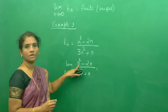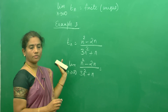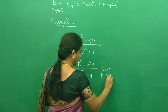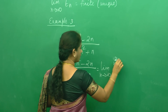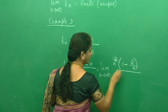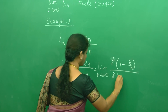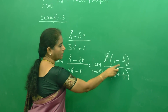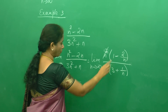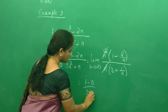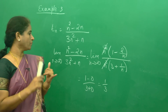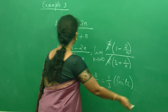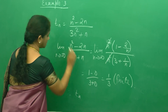Tn = (n² - 2n) / (3n² + n). You should take the highest power of n, which is n², common from both numerator and denominator. The numerator becomes n²(1 - 2/n) and the denominator becomes n²(3 + 1/n). The n² cancels. Applying the limit as n tends to infinity, 2/n → 0 and 1/n → 0, so this becomes (1 - 0)/(3 + 0) = 1/3. Is this a unique answer? Yes. So it is finite and unique. Therefore the sequence Tn converges.